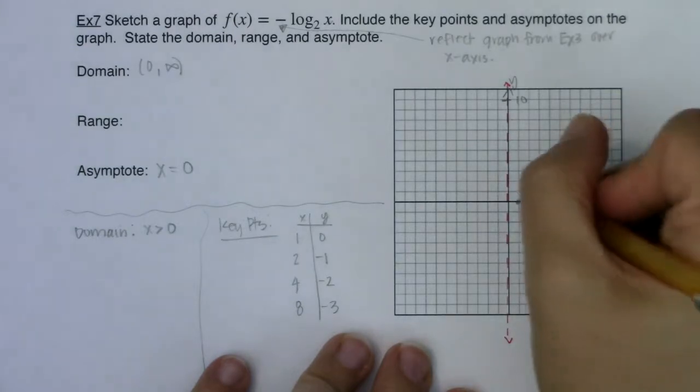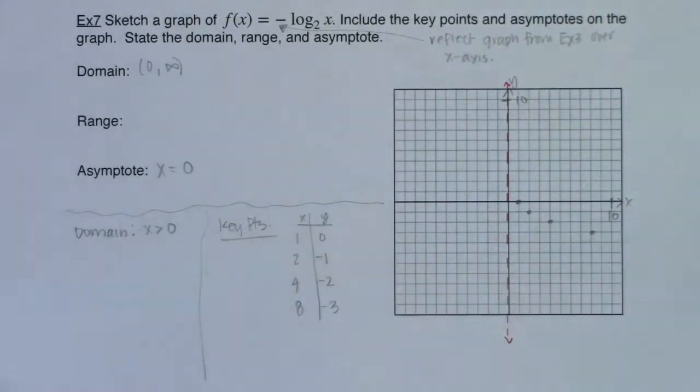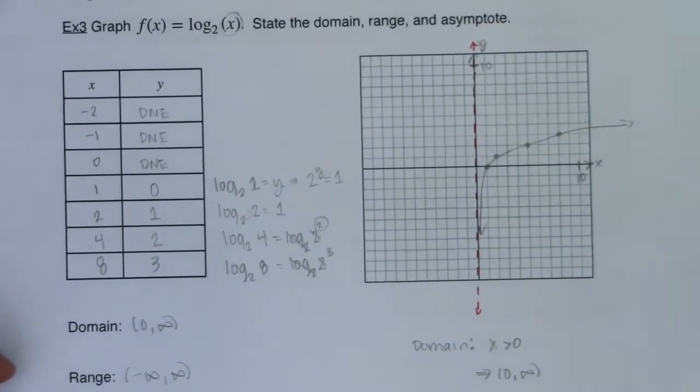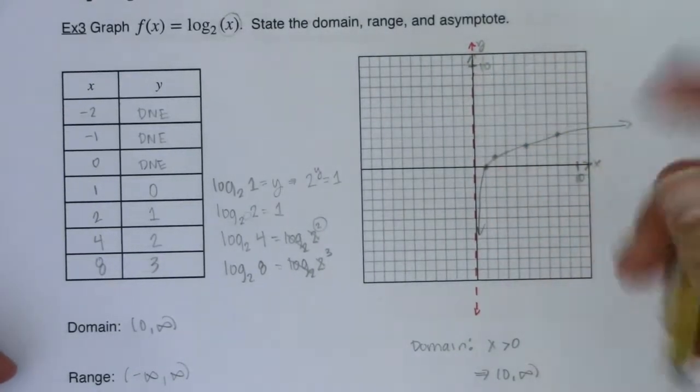So I can see my graph coming in and if you're struggling with this just a bit let's go back to the graph we found in example three. And I want you to think about what this would look like if we reflected this graph over the x-axis.